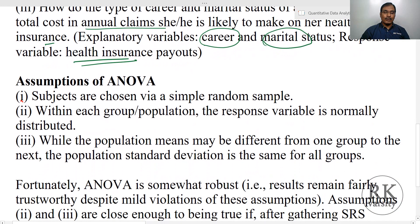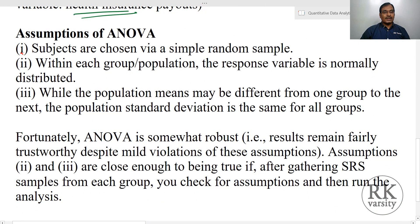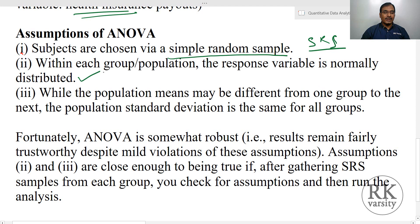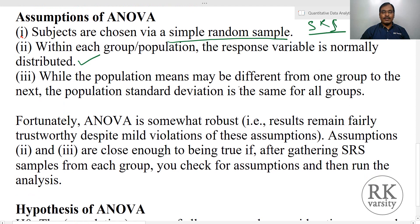Now we look at the assumptions of ANOVA. First, subjects are chosen as a simple random sample (SRS). Second, within each group or population, the response variable is normally distributed. Third, while the population means may differ from group to group, the population standard deviation is the same for all groups. These are the three key assumptions of ANOVA.